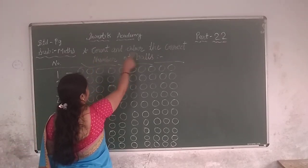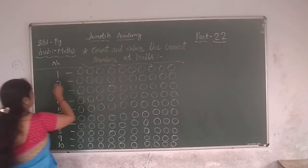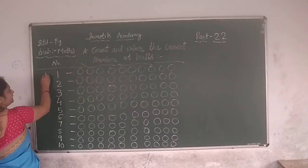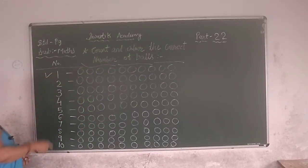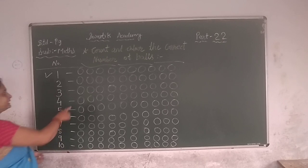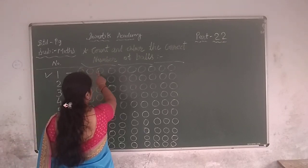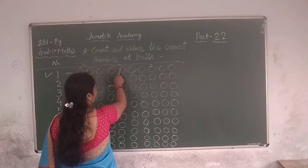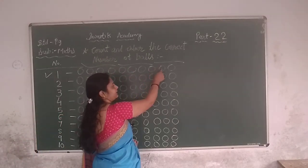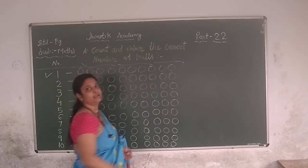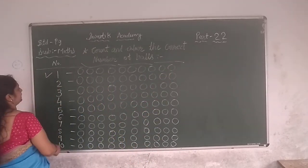Count and colour the correct number of balls. So, here we go. Balls. 1, 2, 3, 4, 5, 6, 7, 8, 9, 10. So, here we go. 10.